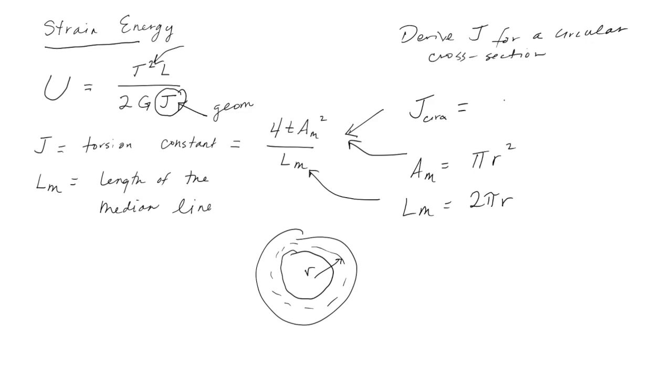Which gives us 4T pi squared r to the fourth over L, which is 2 pi r. One of the r's cancels, so this becomes 3, and then this becomes 2, so we end up with 2T pi r cubed. That's the torsion constant if we have a circular cross-section. That's the strain energy for a thin-walled tube.